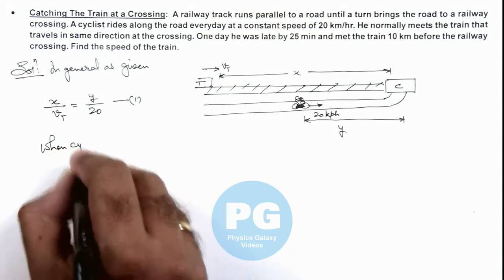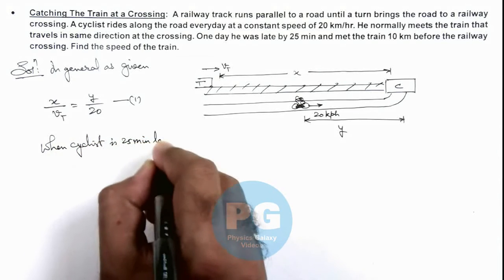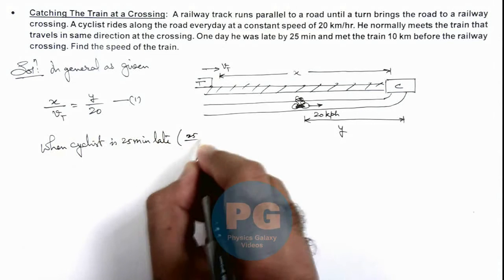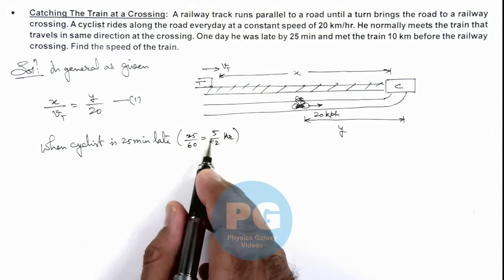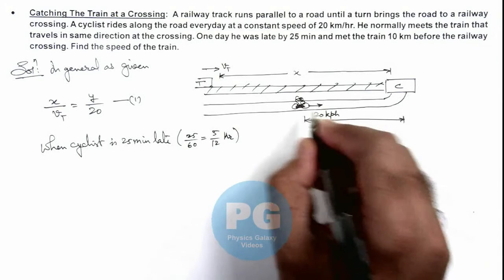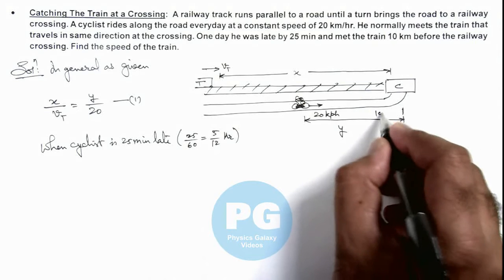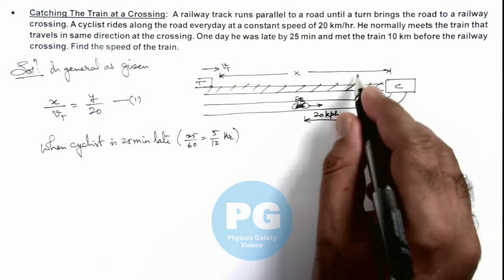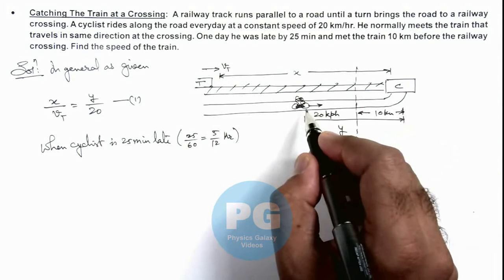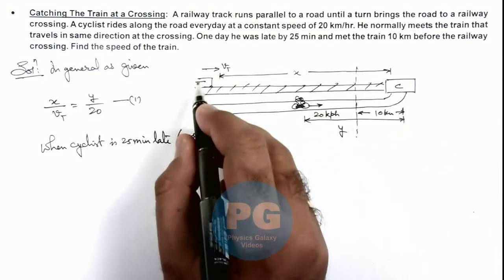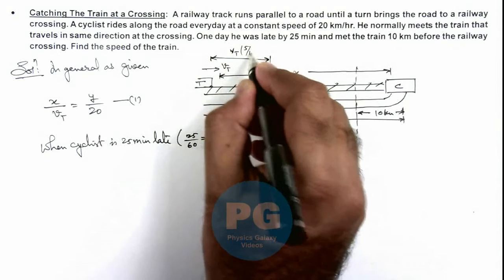We can write when the cyclist is 25 minutes late. We convert 25 minutes to hours: 25 by 60, that is 5 by 12 hours. If he is late by 5 by 12 hours, the cyclist will meet the train at a distance 10 kilometers before the crossing. Somewhere before the crossing, the cyclist will meet the train. As he is late by 25 minutes, in this 25 minutes the train would have traveled a distance of v_t multiplied by 5 by 12 kilometers.